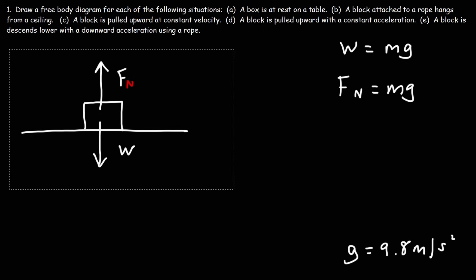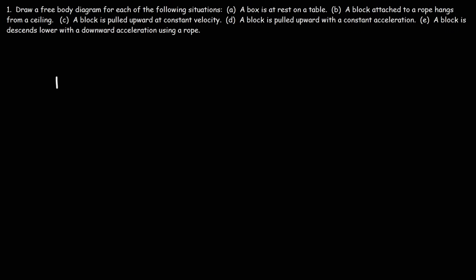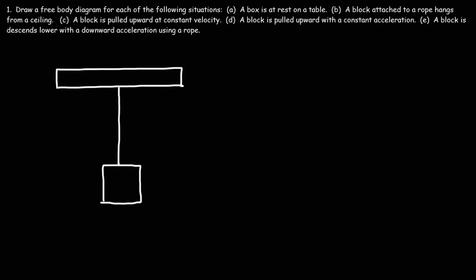Now let's move on to part B: a block attached to a rope hangs from a ceiling. What forces are acting on this block? We have the weight force, which we can call W or F-gravity, and we also have an upward tension force. This block is at rest — it's not accelerating upward or downward. So the net force in the y direction is zero. Therefore, these two arrows should be of the same length.